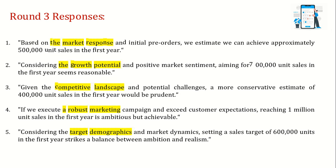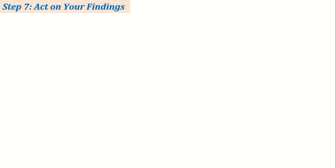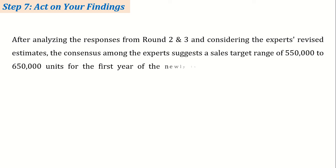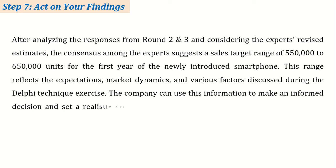Once the Delphi process concludes, the results are analyzed and used for decision making, forecasting, policy development, or any other purpose defined in the study's objectives. After analyzing the responses from rounds two and three and considering the experts' revised estimates, the consensus suggests a sales target range of 550,000 to 650,000 units for the first year of the newly introduced smartphone. This range reflects the expectations, market dynamics, and factors discussed during the Delphi Technique exercise.